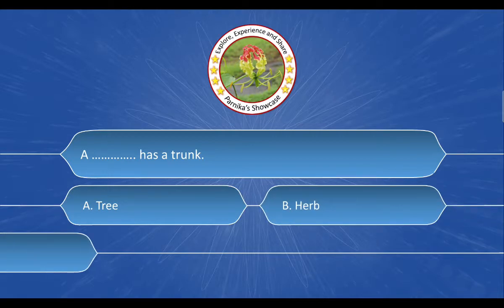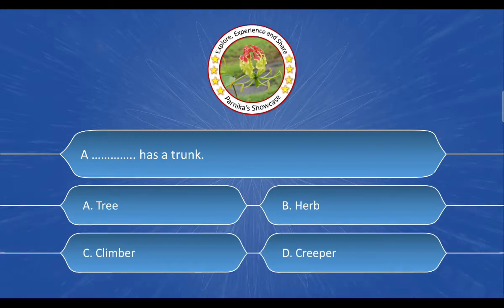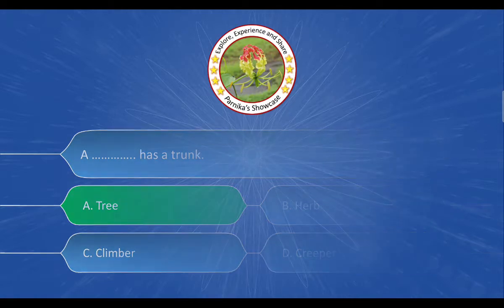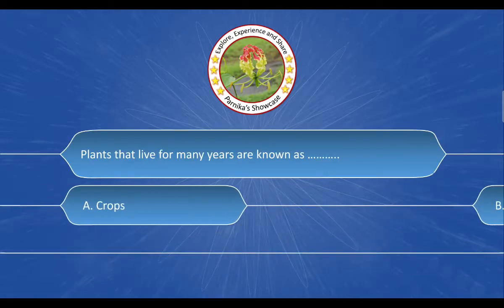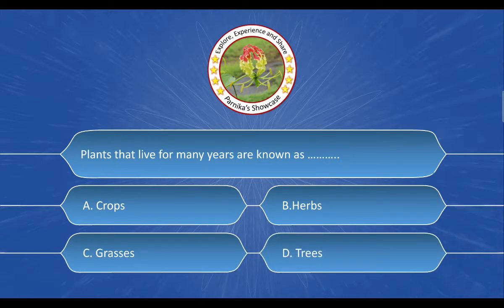Next question: A dash has a trunk. The options are A. Tree, B. Herbs, C. Climbers, D. Creepers. And the correct answer is Option A. Trees.